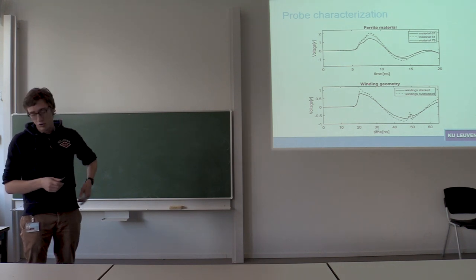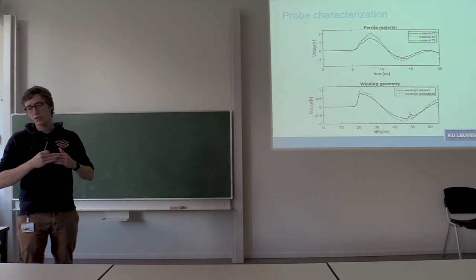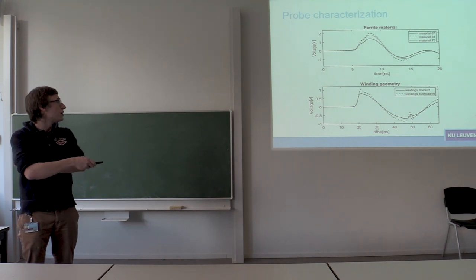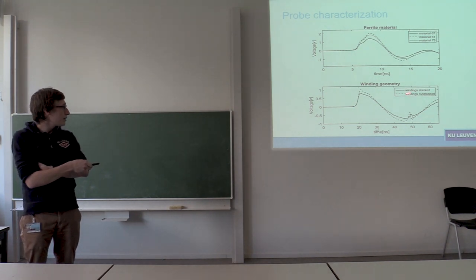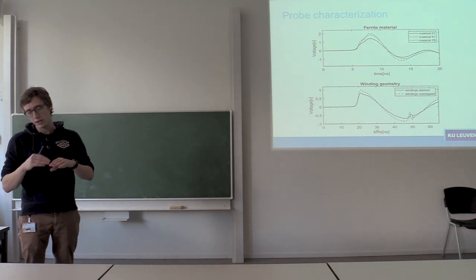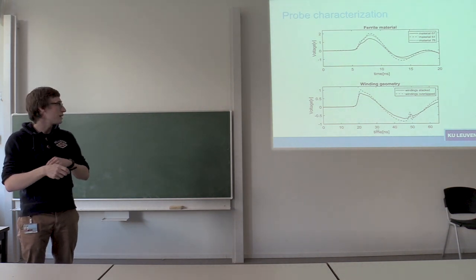And then varying the winding geometry. So commonly what's done is the solenoid windings are placed one on top of each other - that's what you mean with windings stacked. Then you get a smaller pulse than when you would horizontally overlap the different windings.